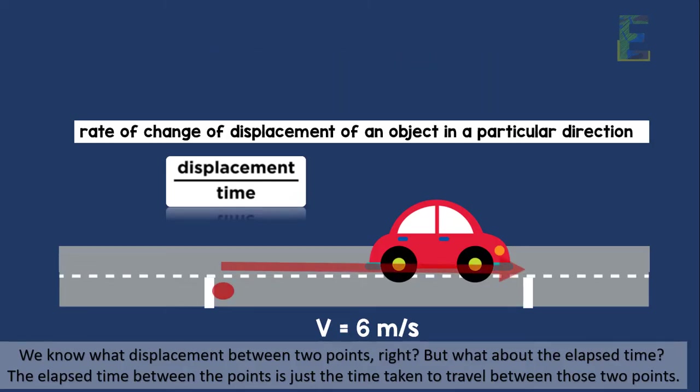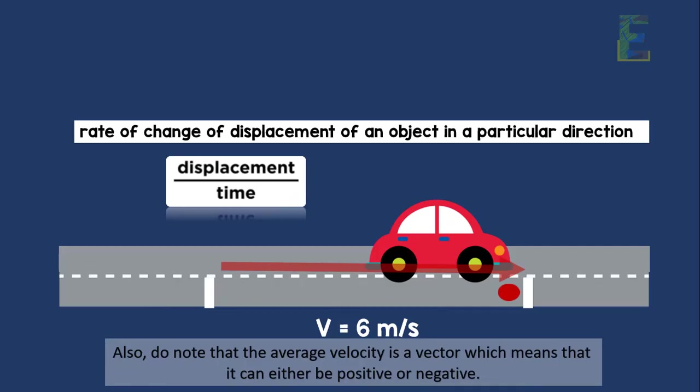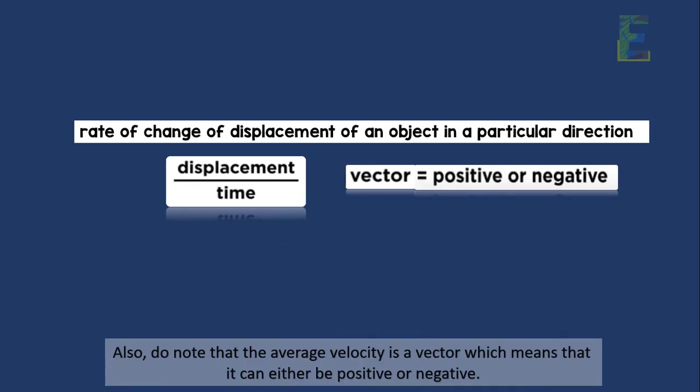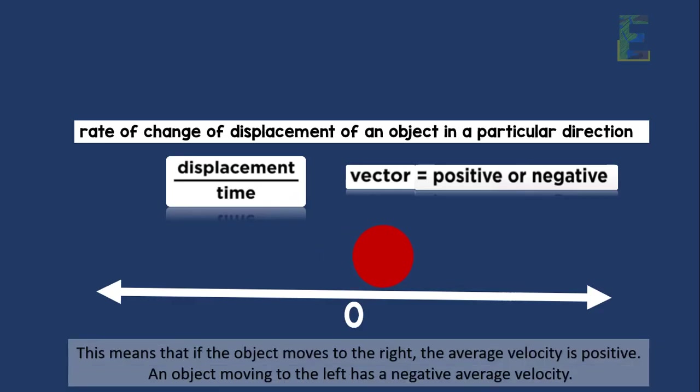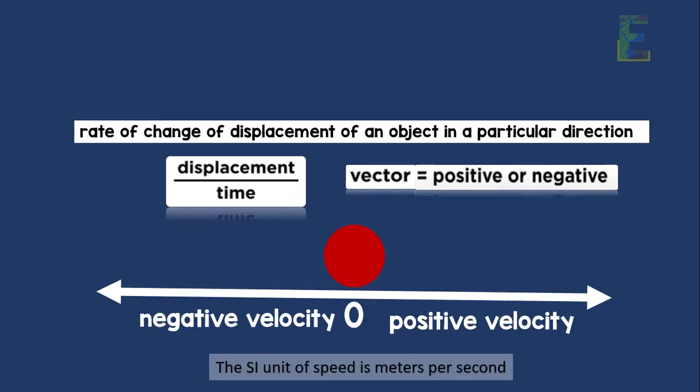Well, the elapsed time between the points is just the time taken to travel between those two points. Also, do note that the average velocity is a vector, which means that it can either be positive or negative. This usually depends on the positions of the initial position and final position. This means that if the object moves to the right, the average velocity is positive. An object moving to the left has a negative average velocity. The SI unit of speed is meters per second.